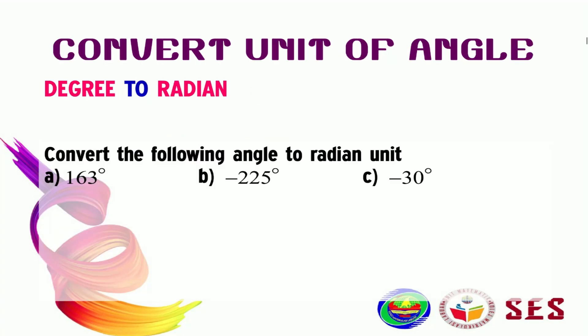Now, let's discuss degree and radian. In degrees, as we've seen before, a full rotation is 360 degrees.